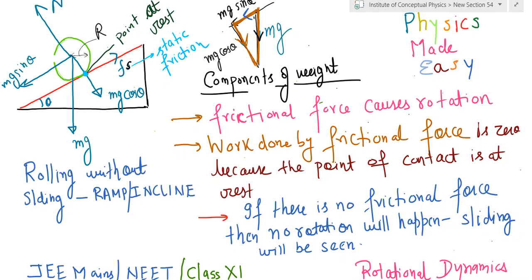This is a very important point to understand: that the body rolls down with the help of friction, but the point which is in touch with the ramp stays at rest. Very, very important concept to understand.